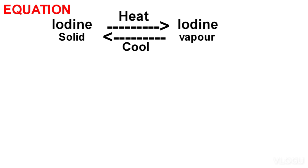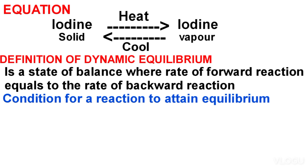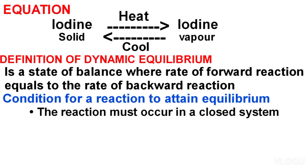Dynamic equilibrium is a state of balance where the rate of forward reaction equals the rate of backward reaction. Condition for a reaction to attain equilibrium: the reaction must occur in a closed system.